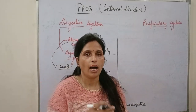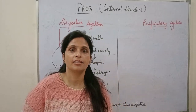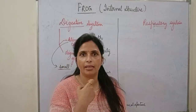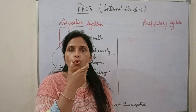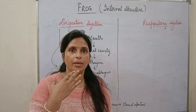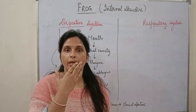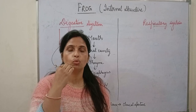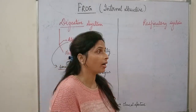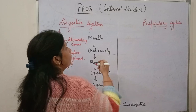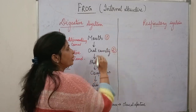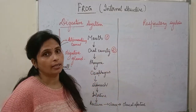If we talk about the digestive route — how food goes through the body — first of all, food goes into the mouth. Then food goes through the mouth into the inner cavity, which is called the buccal cavity. So, first is the mouth, and second is the oral cavity or buccal cavity.